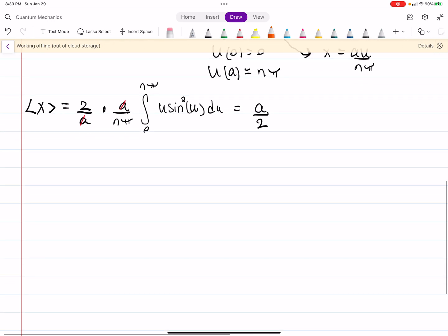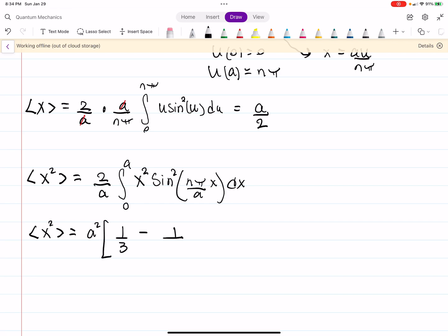And the expectation value of x squared follows the exact same process, except now it's x squared sine squared n pi over a x dx. And you can follow pretty much the exact same procedure as before. You can do a similar substitution. You could plug this into an integral. You might have an integral table, but your expectation value of x squared will be a squared times 1 third minus 1 over 2 n squared pi squared.